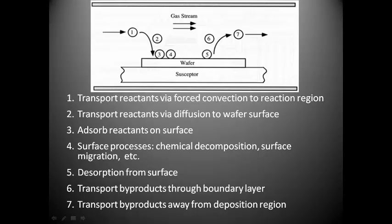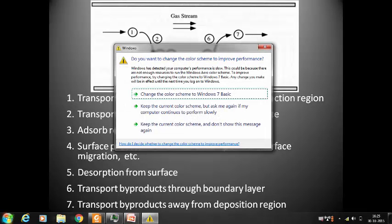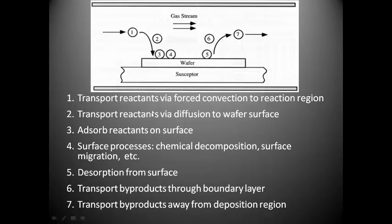Then adsorb reactant on the surface, then reaction on the surface. After that the reaction on the surface of the workpiece gets displaced. After that the surface processes include chemical decomposition and surface migration. Then desorption from the surface takes place and these gases get evolved and transport by-product to the boundary layers.